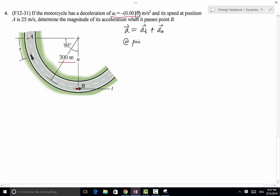we can say that s_B equals to one quarter of 2πr, which is simply one-half times π times r, which is the radius, and that equals to 471.2 meters.